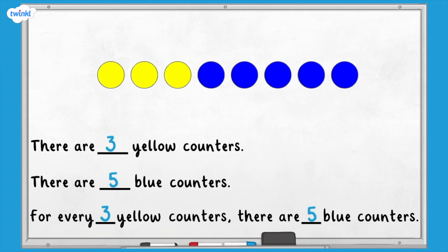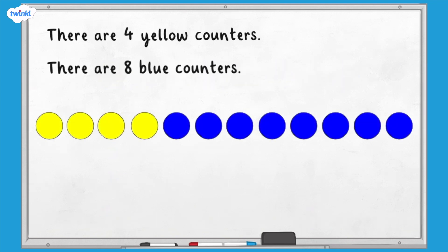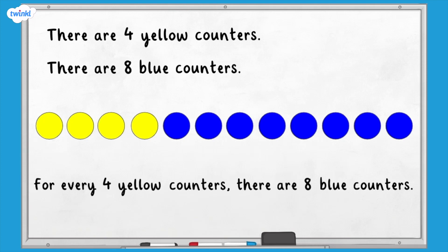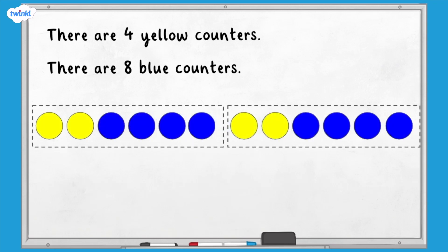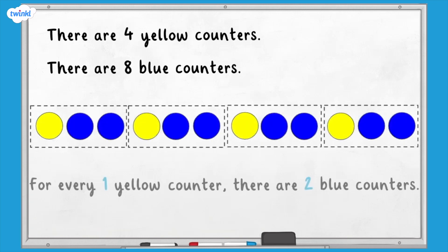Sometimes we can express a relationship between objects in different ways. Here we have four yellow counters and eight blue counters. We could say for every four yellow counters there are eight blue counters. We could also group the counters — for every two yellow counters there are four blue counters, or for every one yellow counter there are two blue counters.